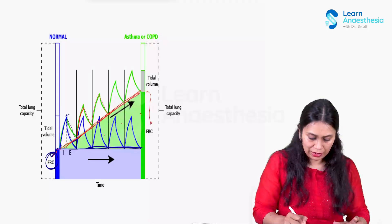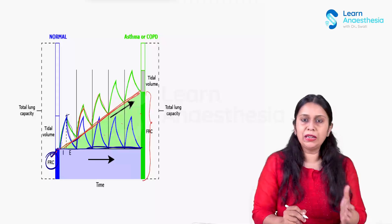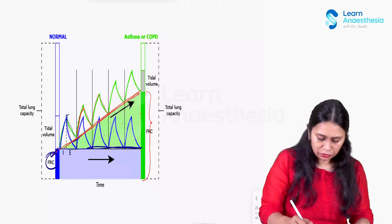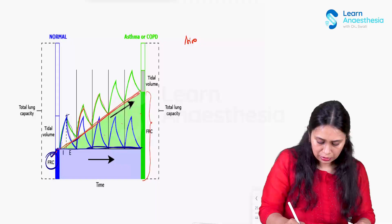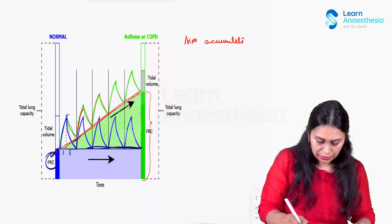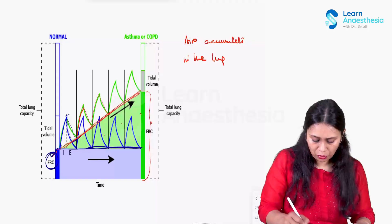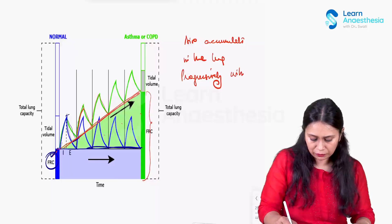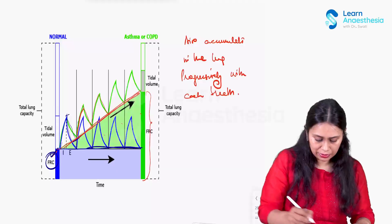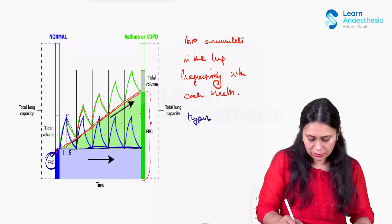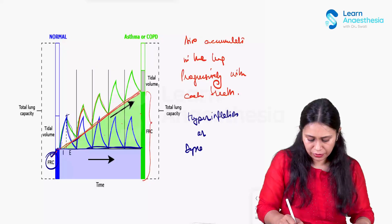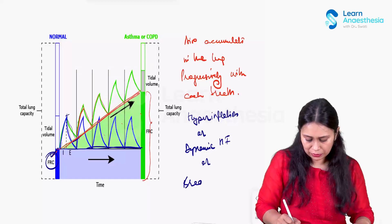Air progressively accumulates in the lung with each breath, resulting in increasing FRC, dynamic hyperinflation, or what we call breath stacking. This results in hyperinflation of the alveoli — dynamic hyperinflation — or breath stacking.